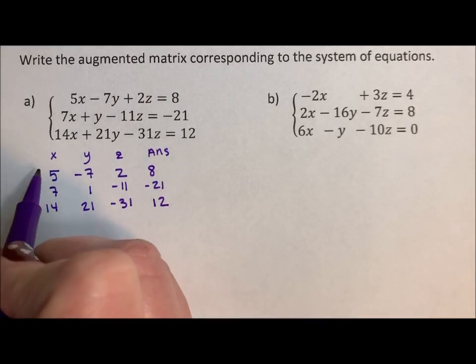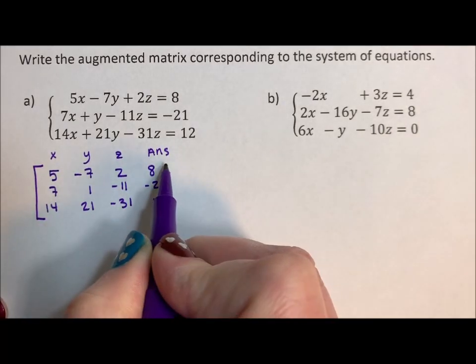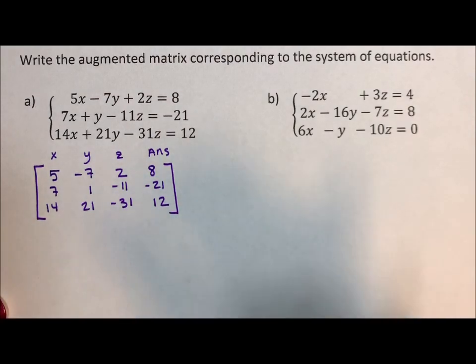To make it a matrix, we just need brackets, solid line brackets, and we have ourselves a matrix.